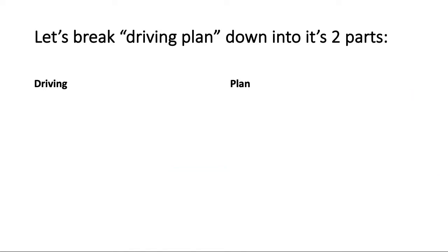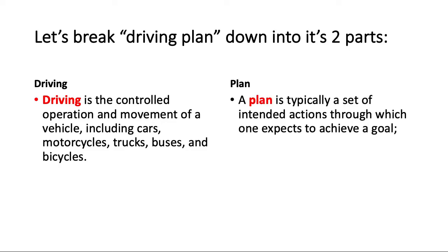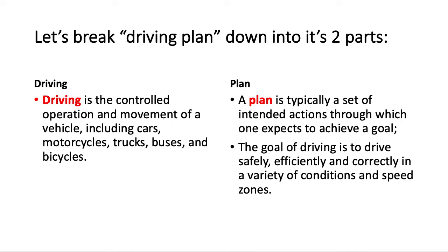Let's break driving plan down into its two parts: the driving and the plan. Driving is the controlled operation and movement of a vehicle, including cars, motorcycles, trucks, buses and bicycles. A plan is typically a set of intended actions through which one expects to achieve a goal. The goal of driving is to drive safely, efficiently and correctly in a variety of conditions and speed zones.